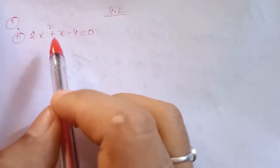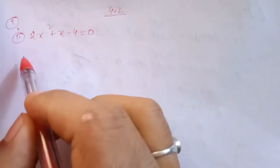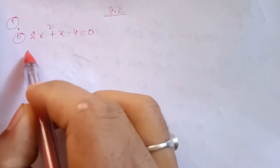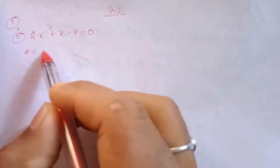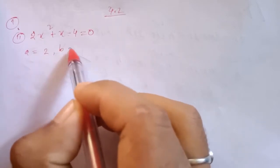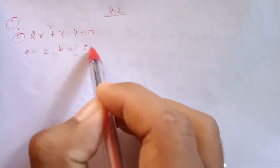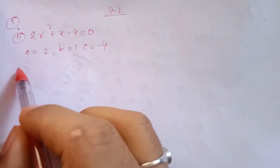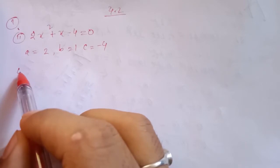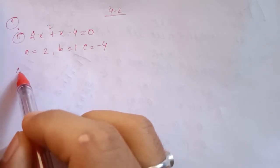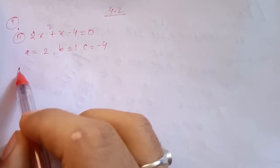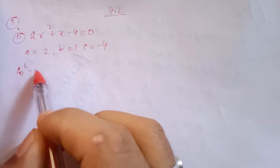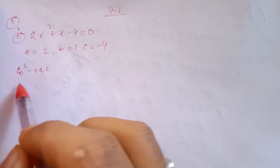This number is 2x squared plus x minus 4. Here you can see a equal to 2, b equal to 1, c equal to minus 4. Because we have to find this number. Let's find this number — b squared minus 4ac. That's the idea.